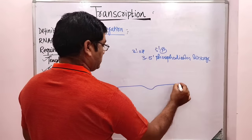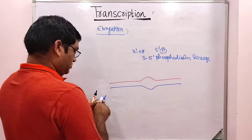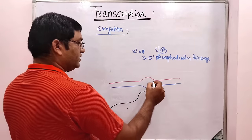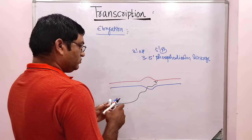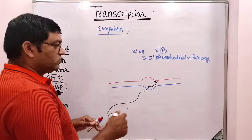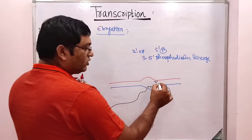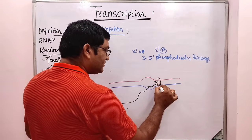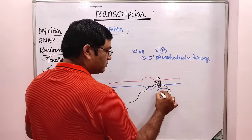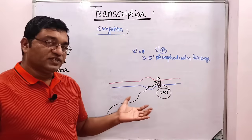Suppose this is the newly synthesized RNA and polymerization is going on. Nucleotides will be added to the 3 prime end. And one nucleotide of the template strand acts as a template for the synthesis, with the help of the protein bridge.